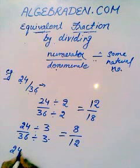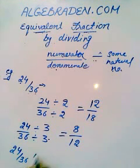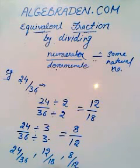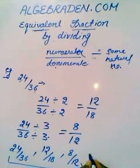So, 24 over 36, 12 over 18, and 8 over 12 are equivalent fractions.